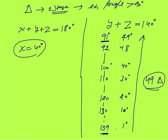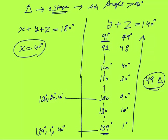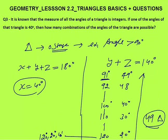The maximum obtuse angle is 139 degrees, giving the triangle 139, 1, 40. So the obtuse angle ranges from 91 to 139, giving 139 minus 91 plus 1 equals 49 triangles. So 49 possible obtuse angle triangles exist when one angle is 40 degrees. That covers triangle basics plus some questions. In the next lesson I will continue with more questions on triangle basics. Thank you.